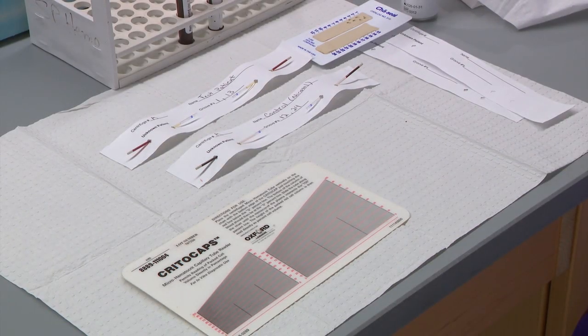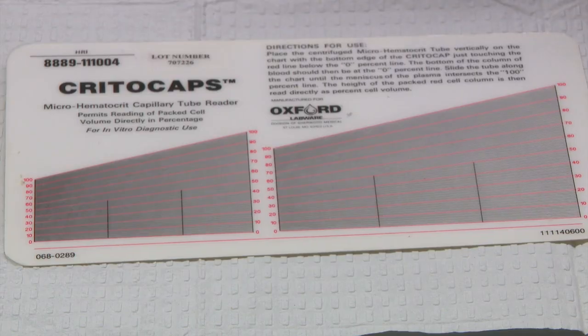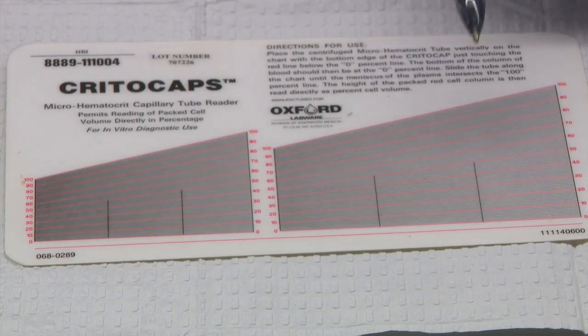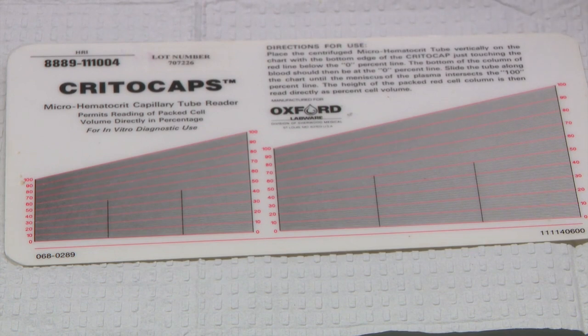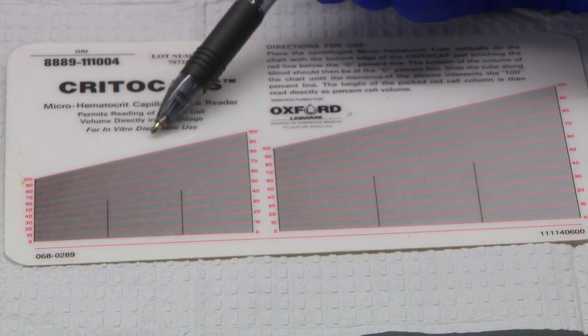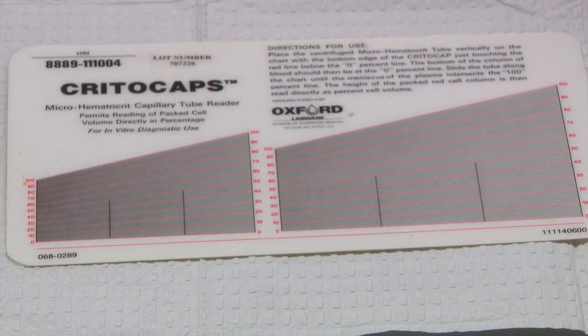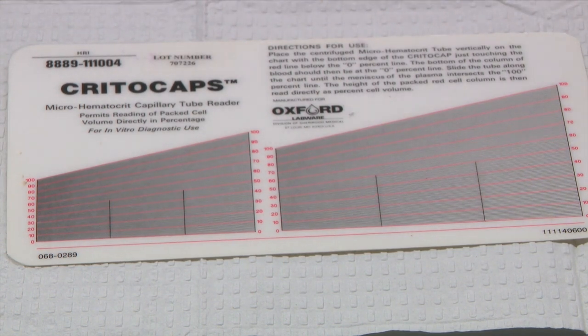We are going to start by reading the values of the control micro hematocrit tubes. To do this, we use a hematocrit manual card reader. On the card, there are two charts to place the tube to determine the hematocrit value. In general, we will use the chart on the right.